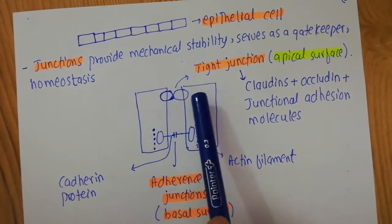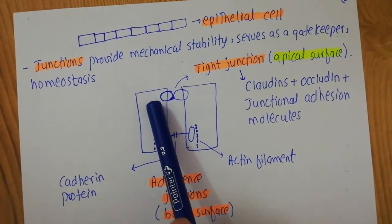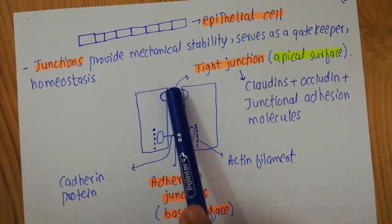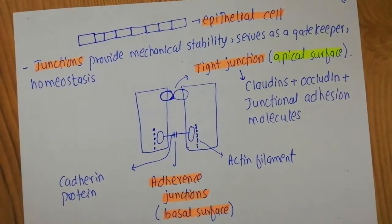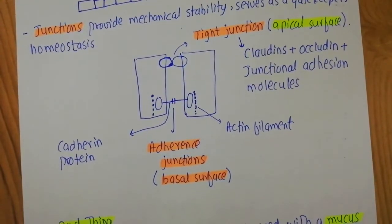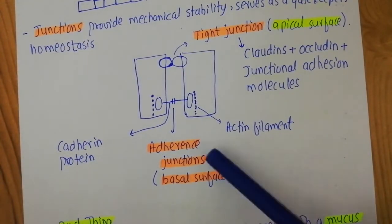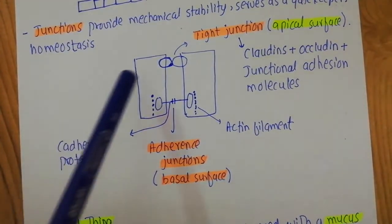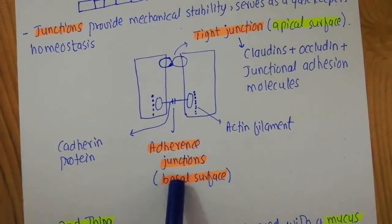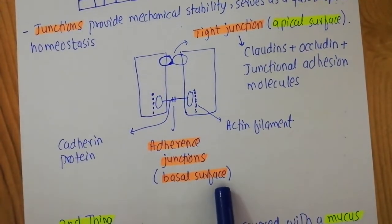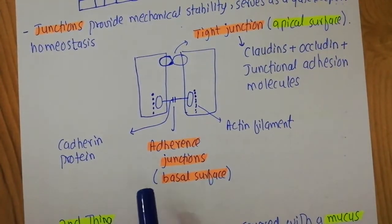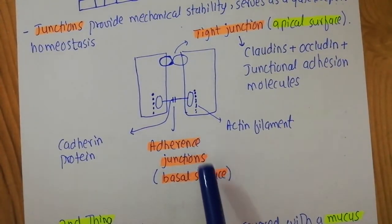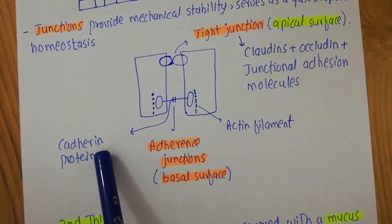These transmembrane proteins are present in the epithelial cells and on the exterior part they are connected to each other to make this particular barrier. Another important junction is the adherence junction. These adherence junctions are present at the basal surfaces of the epithelial cells — whereas tight junctions are at the upper part, adherence junctions are at the basal surface. The important proteins in these adherence junctions are known as cadherin proteins.